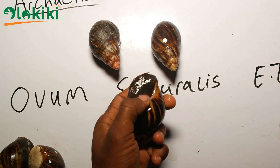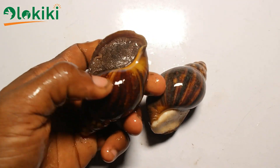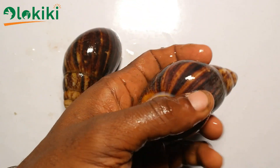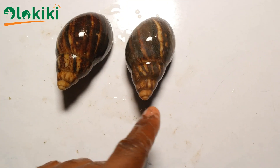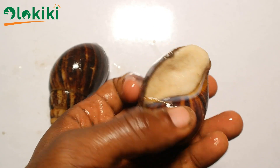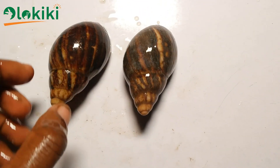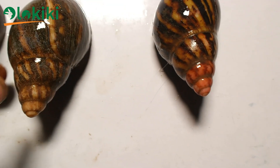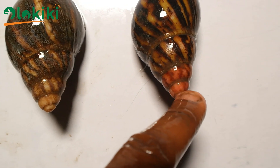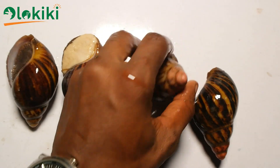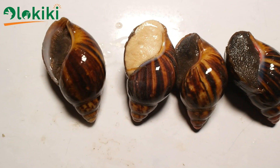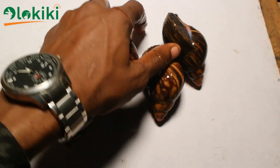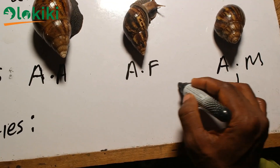Let me shed more light on the varieties by comparing them side by side. Looking at the snails I'm holding presently, you can see they are ovum because they have the white tip on their shell. One of them is also albino. Further comparing them to the suturalis variety, you can see the tip of the ovum is white while the tip of the suturalis is pinkish in color. Comparing the opening of their shell — the columella — the suturalis is pinkish in color, whereas the ovum is yellowish or whitish in color. Those are the distinct features of the two varieties.